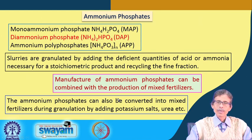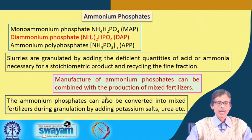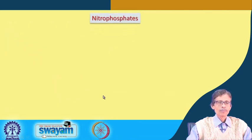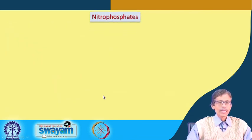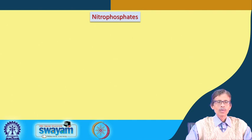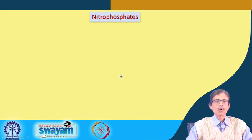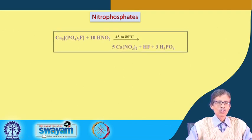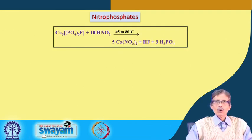Urea is a separate compound we will see how to make in the following part of this class. We can also bring a nitro function instead of ammonia, and those compounds are commercially known as nitrophosphates.